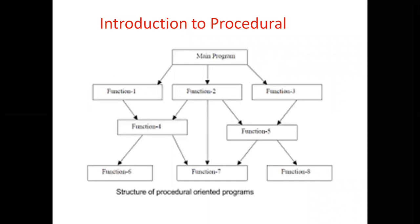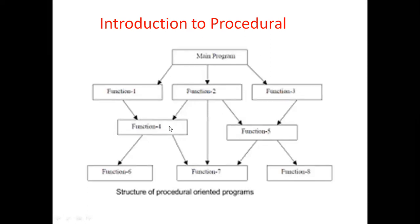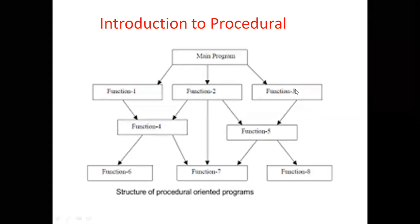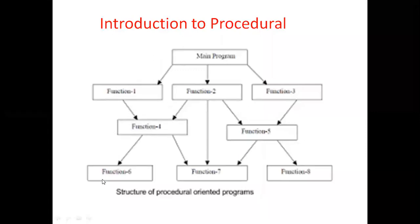You can see this diagram. First we have a main function, and the main function is divided into a number of functions: function one, function two, function three. Function four is shared by function one and function two. Function five is shared by function two and function three. Function six is shared from function four. This is the structure of procedural-oriented programming.